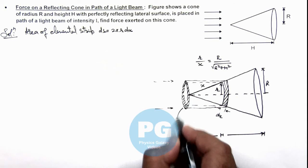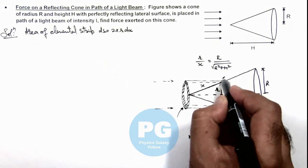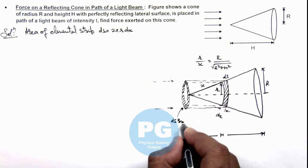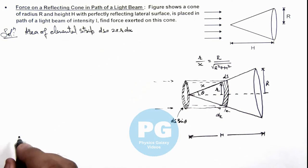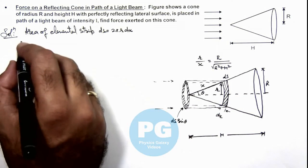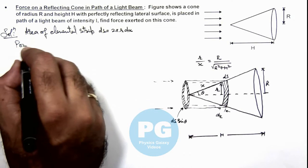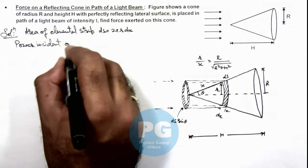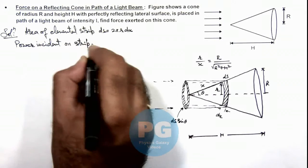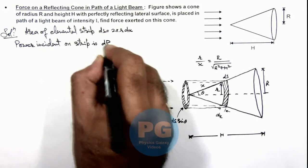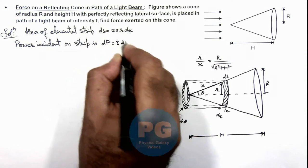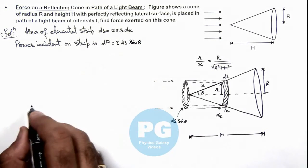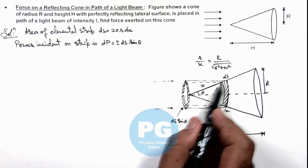This area of the strip is dS, and the effective cross-sectional area would be dS·sinθ, where θ is the half-angle of this cone. So the power incident on the strip is dP = I · dS · sinθ. This is the power incident on this elemental strip.